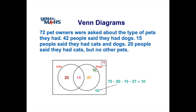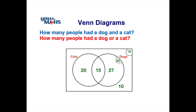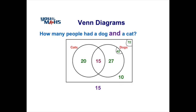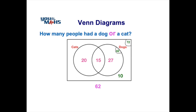Let's look at some questions you might get asked from a completed Venn diagram. The two here are: how many people had a dog and a cat, and how many people had a dog or a cat. For the first question, the key word is 'and' — in Venn diagram questions, this means we're looking for the intersection of the two sets, which is the middle of the two circles. The answer is 15. For the second question, we use inclusive OR, meaning we look for people that had a dog, a cat, or both. This is called the union of the two groups — everyone in both circles — giving us 62 people.